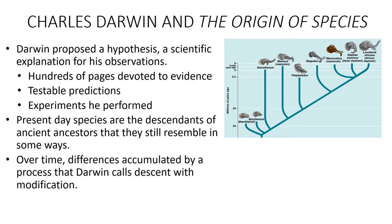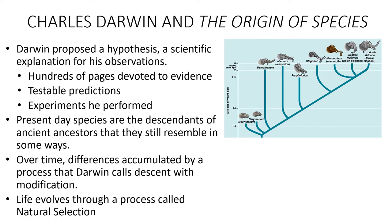Descent with modification means that your offspring can have slight modifications that accumulate over time, so through the generations you can have change in species. Life evolves, and the main process is going to be called natural selection.